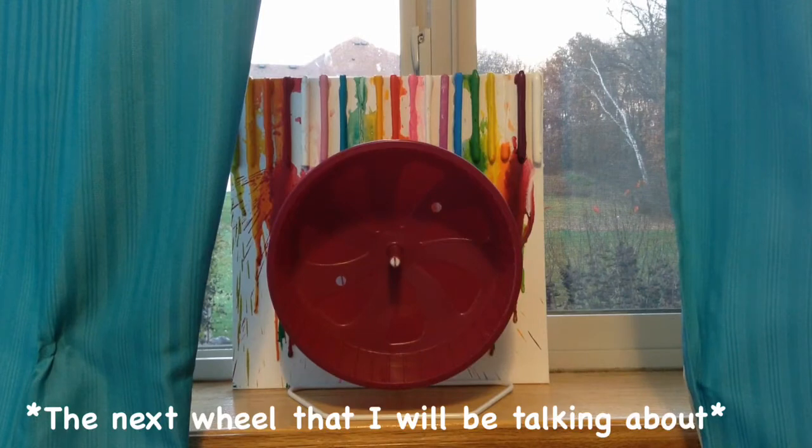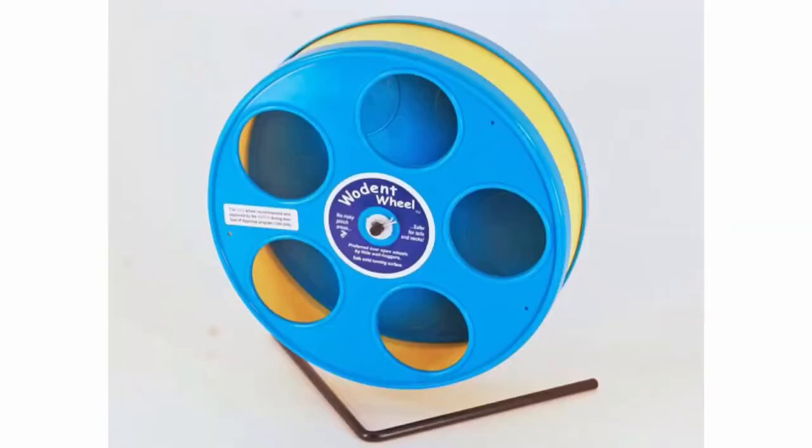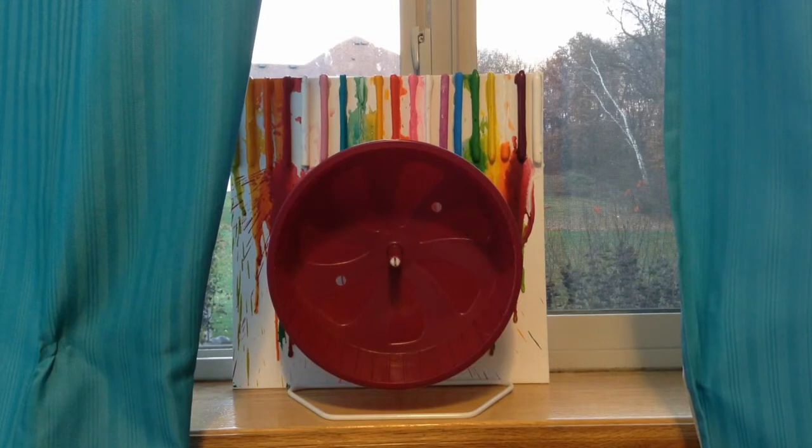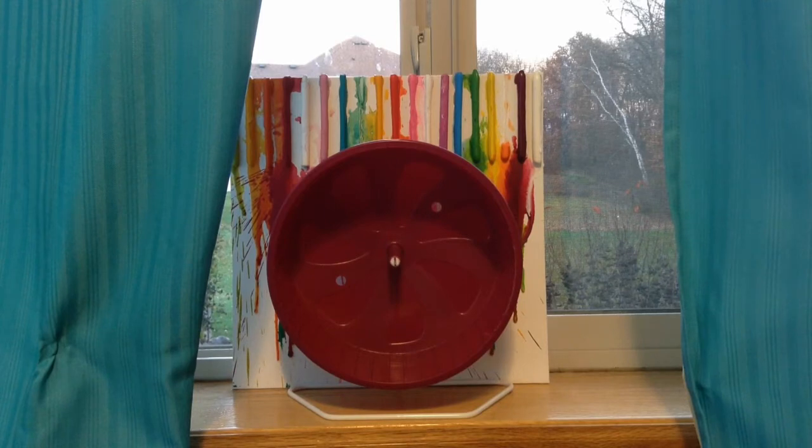The next wheel is the Wodent wheel. There are three sizes: the Wodent wheel junior, the Wodent wheel senior, and the Wobust Wodent wheel. The junior is 8 inches and is good for Syrians and Chinese hamsters. I don't recommend any Wodent wheels for dwarfs or robos because the wheels are pretty big. The senior is 11 inches and I would only recommend that for a larger Syrian.